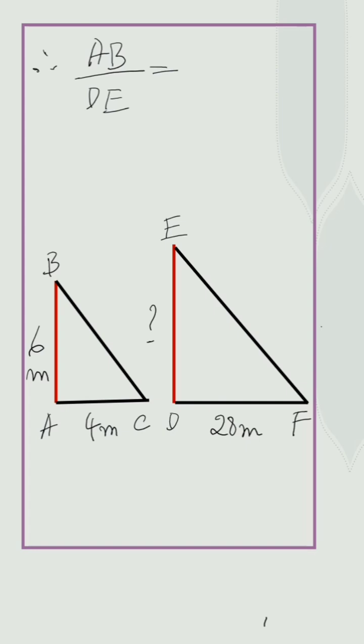Therefore, AB by DE is equal to AC by DF. It implies that 6 by DE is equal to 4 by 28. So, DE is equal to 6 into 28 divided by 4.